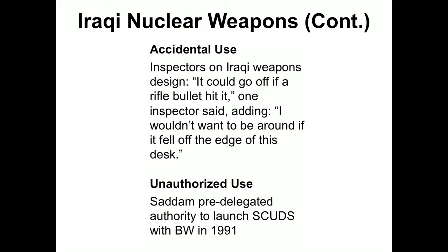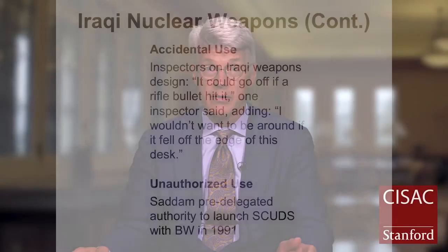There are also dangers about pre-authorized use creating unauthorized activity. Saddam Hussein knew that if there was a nuclear attack on Baghdad, he might not be able to give orders. There is evidence that Saddam pre-delegated authority to launch Scud missiles with biological weapons in 1991, suggesting he might have done so with nuclear weapons had he acquired them.